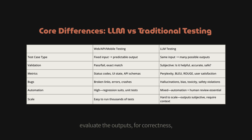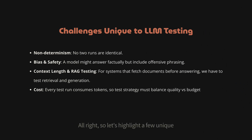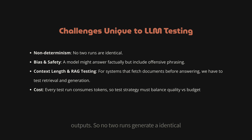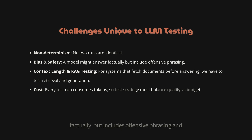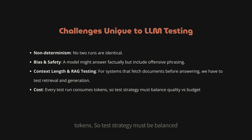Instead, testers must evaluate outputs for correctness, motivation, tone, and even hallucination. Some of the hardest unique challenges in LLM testing include: non-deterministic outputs where no two runs generate an identical response; bias and safety where a model might answer factually but include offensive phrasing; context length and RAG testing where we must test both retrieval and generation; and cost, since every test run consumes tokens and test strategy must be balanced against budget.